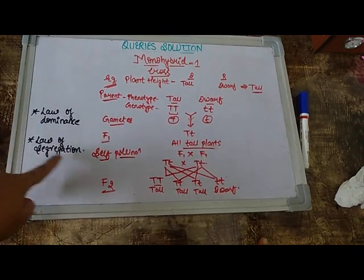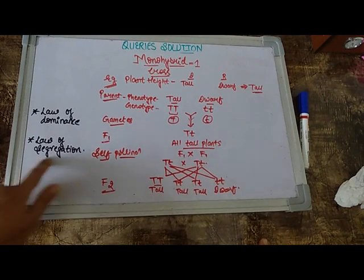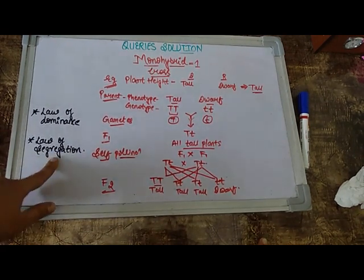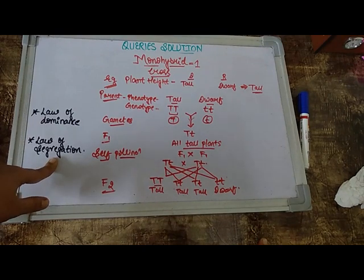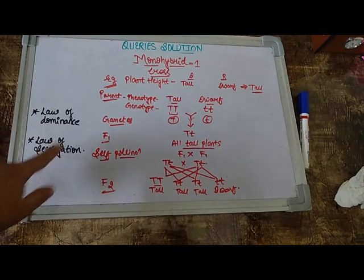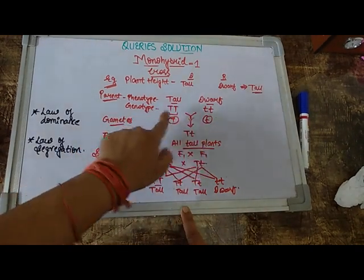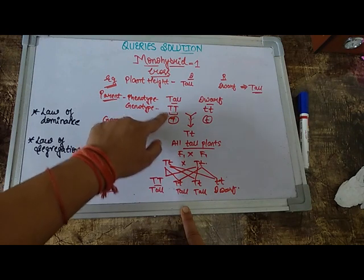The second one is the law of segregation. Now segregation can be a new term to you but I'll just quote a simple term. Segregation you can also understand with the term separation. So in this manner when we are looking at this cross over here you can see that these alleles which are there, they are actually segregating or separating.